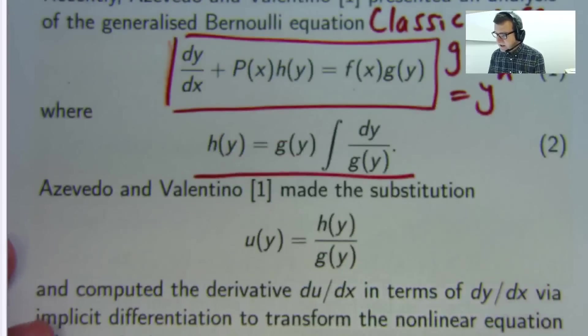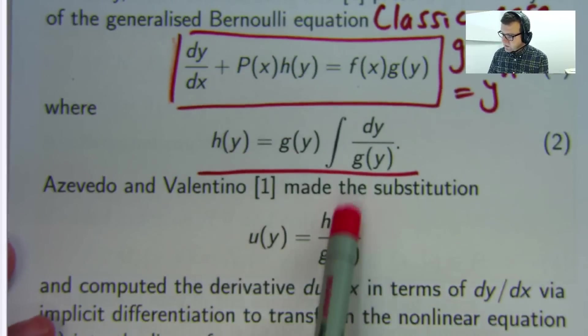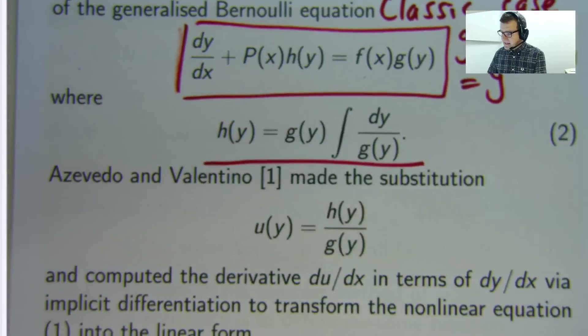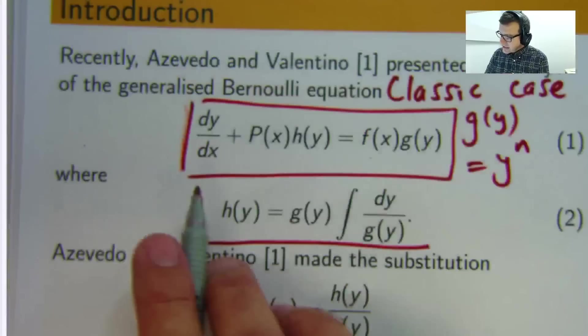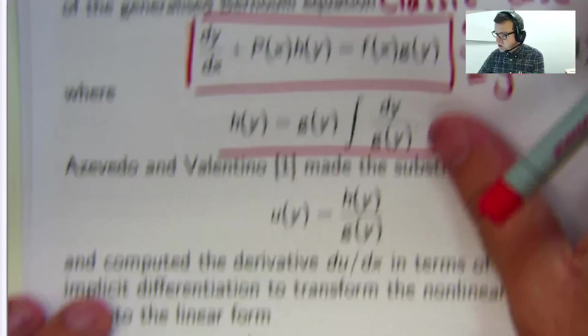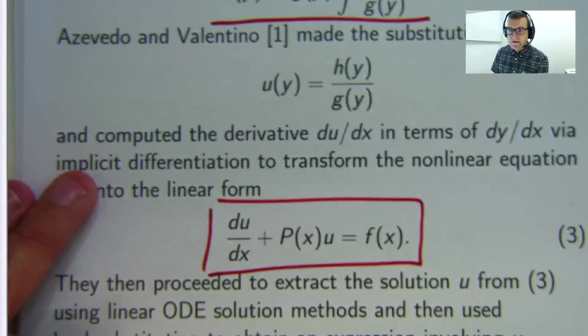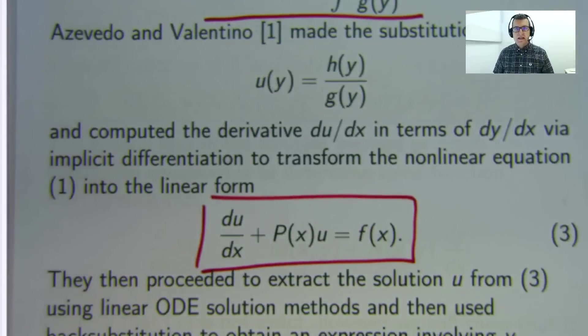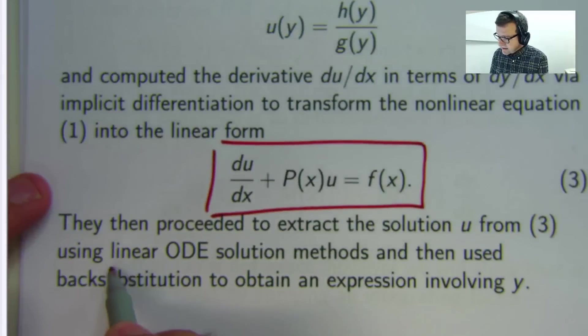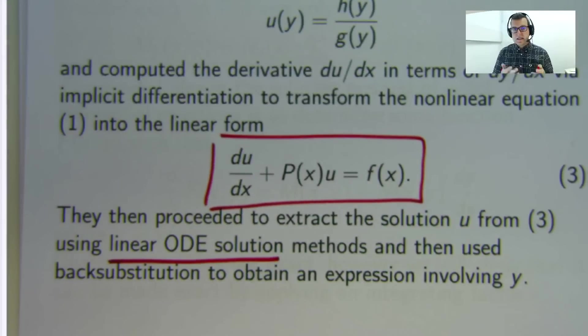So what did they do? Well, they made a substitution u equals this on this just by rearranging. And essentially, they turned this non-linear problem into a linear problem. If you're interested in seeing how they did that, I'll put a link in the bibliography. Very clever idea to take something non-linear and make it linear.